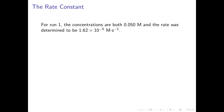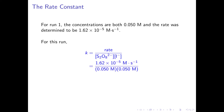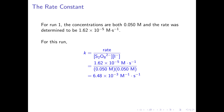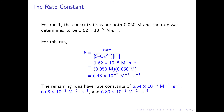For run one, both ion concentrations are 0.050 M and the rate was 1.62×10^-5 M/s, giving k = 1.62×10^-5 / (0.050 × 0.050) = 6.48×10^-3 per molar per second. The remaining three runs give rate constants of 6.54×10^-3, 6.68×10^-3, and 6.80×10^-3 per molar per second.